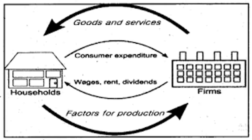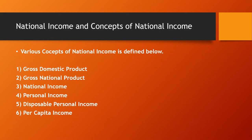This graph shows the circular flow: goods and services flow from firm to household; consumer expenditures flow from household to firm; wages, rent, and dividends flow from firm to household; and factors of production flow from household to firm.